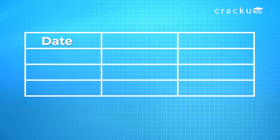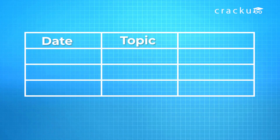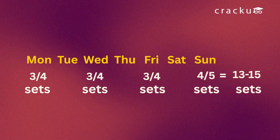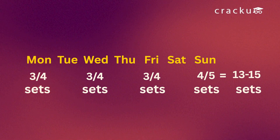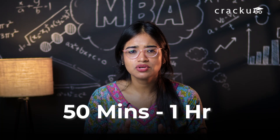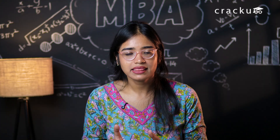PYQs are the best resource for practicing DILR. I will be maintaining a notebook to keep track of my everyday progress — in the first column, the date; in the second column, the topic of that particular set; and in the third column, the time I took to solve it. This will help me know my strengths and weaknesses and stay consistent. As I would be studying DILR on alternate days, my target would be to solve around 14 to 15 sets every week — 3 to 4 sets on weekdays and 4 to 5 sets on weekends. I would initially give 50 minutes to 1 hour to solve each set on my own and then look at the solution.